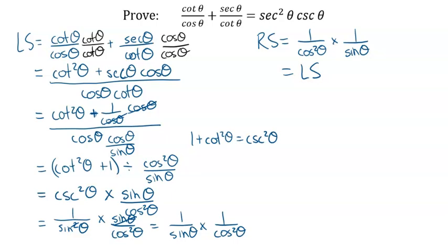Let's recap what we used: we found a common denominator — that was the first and most important strategy. When it was applicable, we changed things into sine and cosine, taking secant and cotangent and expressing them that way. Then we used the Pythagorean identity: one plus cotangent squared theta equals cosecant squared theta. Then we inverted and multiplied and eventually showed the two sides were the same.